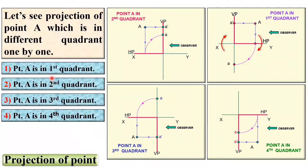In the last video, we discussed the projection of point A by considering point A in the first quadrant, second quadrant, third quadrant, and fourth quadrant. Now let us see the projection of point A by considering the first quadrant only, but with respect to HP and VP.